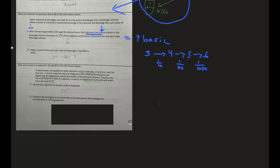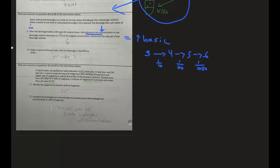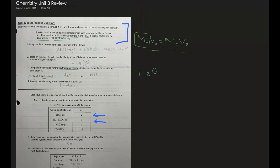Number twelve: compare the hydrogen ion concentration in tomato juice to that in milk of magnesia. Tomato juice is obviously more acidic, and hydrogen ions are more concentrated in acids than in bases. So tomato juice has a greater hydrogen ion concentration. That does it for the review of Unit 8 of Chemistry. If you learned something, make sure you subscribe — thanks for watching.